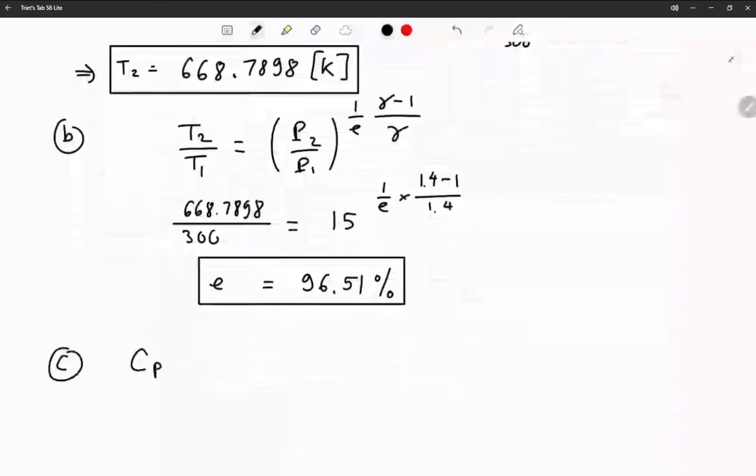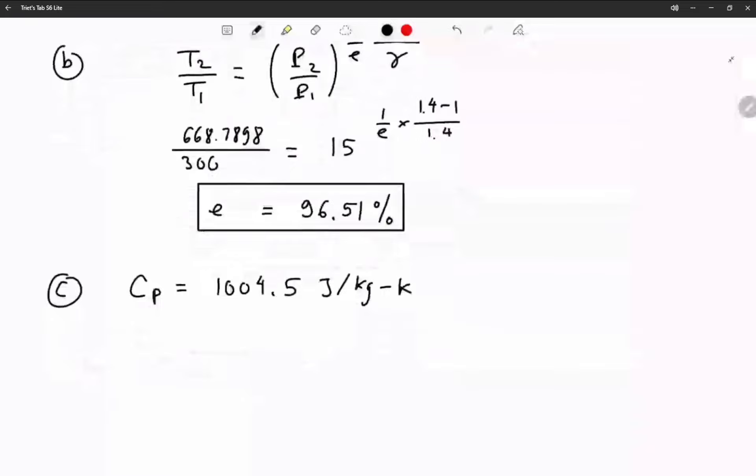Standard air has a cp of 1004.5 joules per kilogram K. Then we have the formula for entropy to be cp ln T2 over T1 minus R ln P2 over P1.